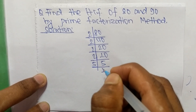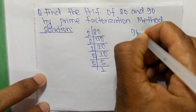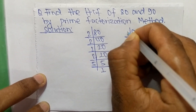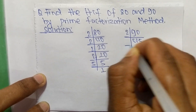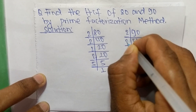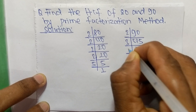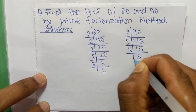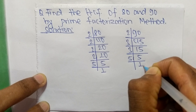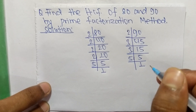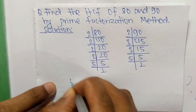Likewise, the prime factors of 90 are: 2 times 45 equals 90, 3 times 15 equals 45, 3 times 5 equals 15, and 5 times 1 equals 5.